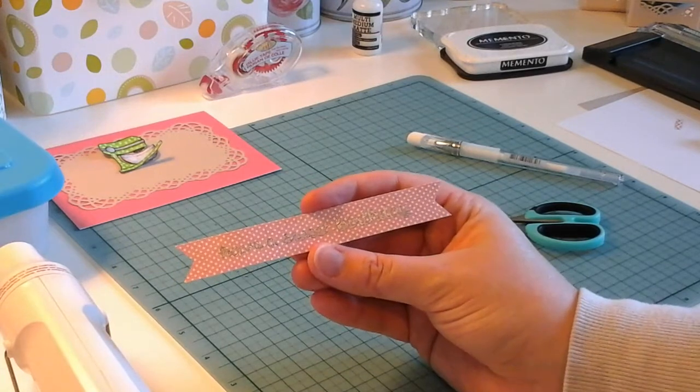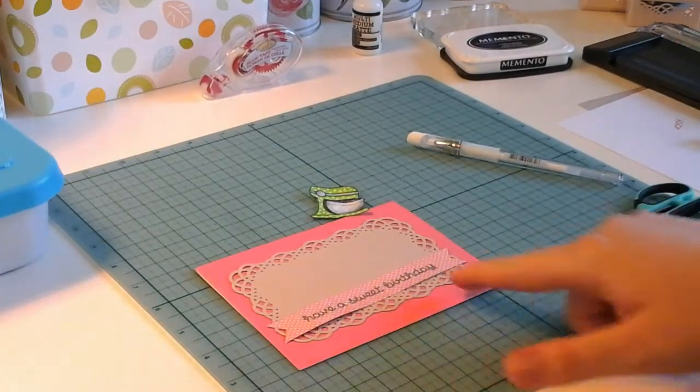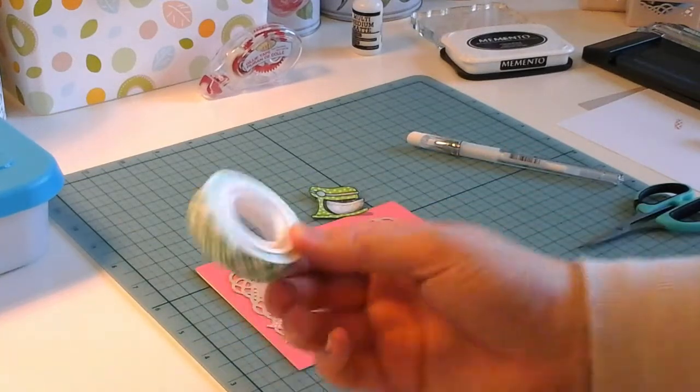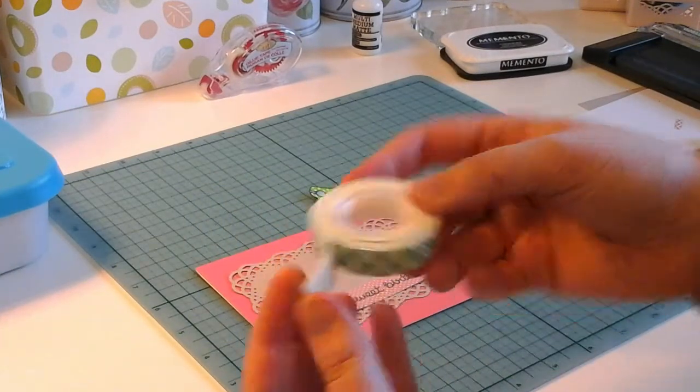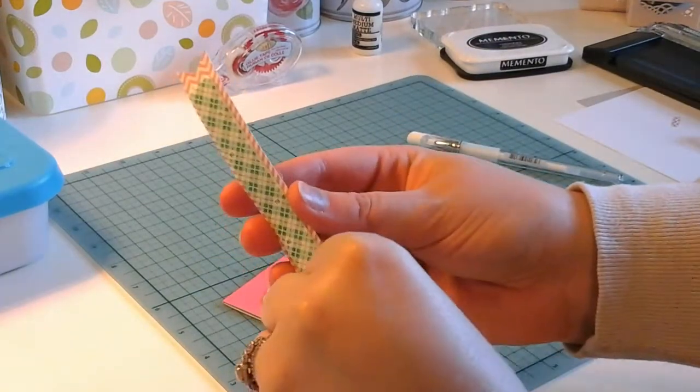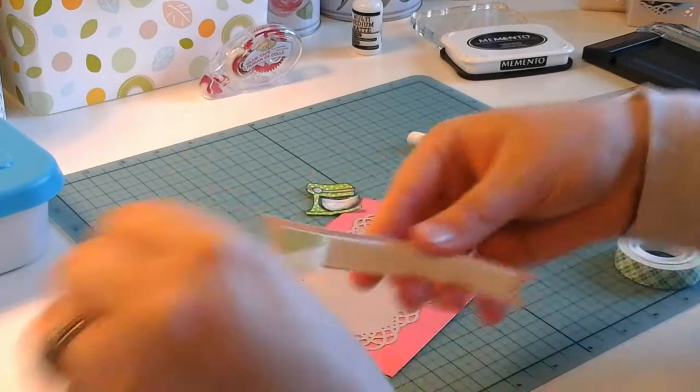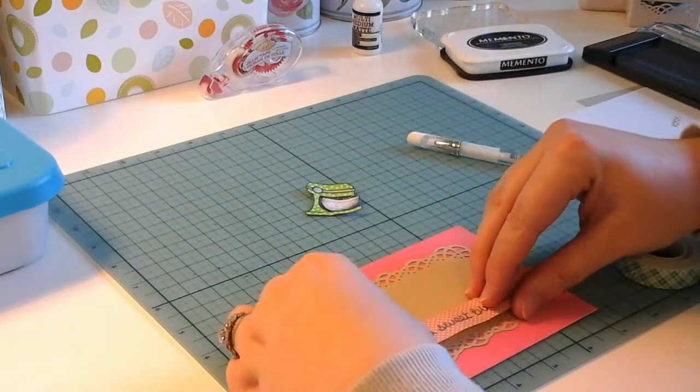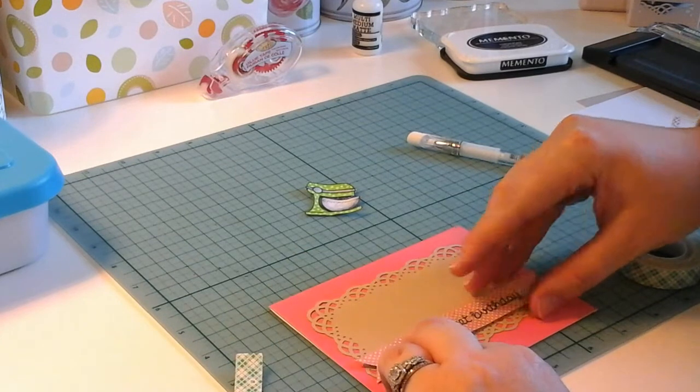Now I'm going to start putting that card together. I want the sentiment to have some dimension off the card, so I'm going to use my 3D foam tape here. I'm going to put a strip along the back. I'm going to peel off the backing and line up where I'd like to have this across my card.